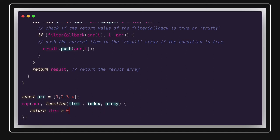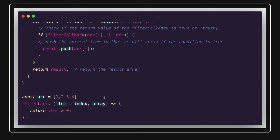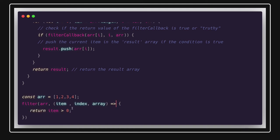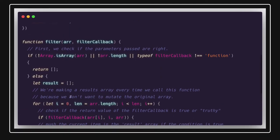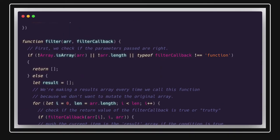For the filter callback, for example, we check if item is greater than zero — returning true or false explicitly. We pass the array and the callback, and you can also use arrow functions. This is the filter implementation. Similarly, you can customize other implementations like reduce.